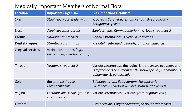On the colon, Bacteroides fragilis and E. coli are the most important normal flora. The vagina harbors Lactobacillus, E. coli, and group B streptococcus as the most important organisms, while the urethra has Staph aureus, Corynebacterium, and various streptococci as the important normal flora.